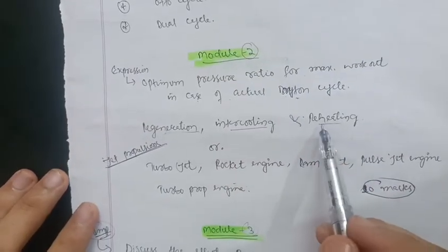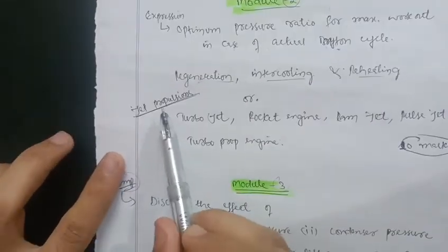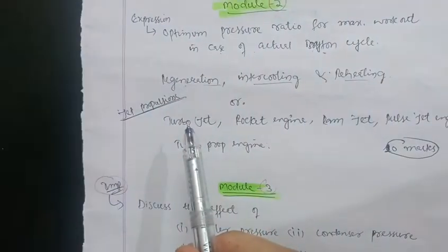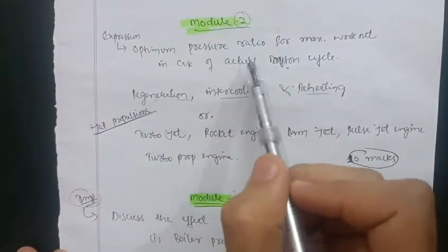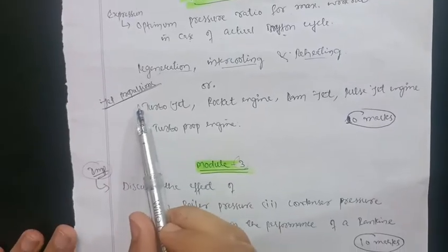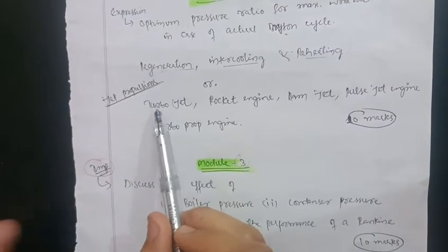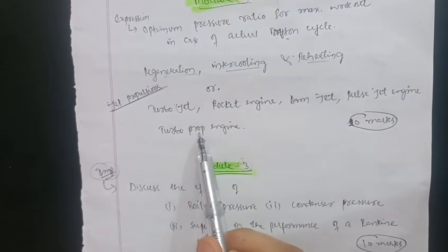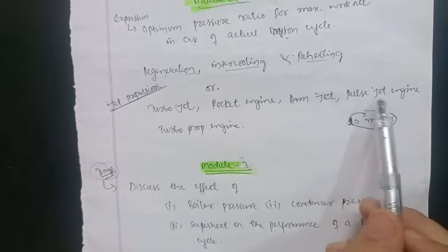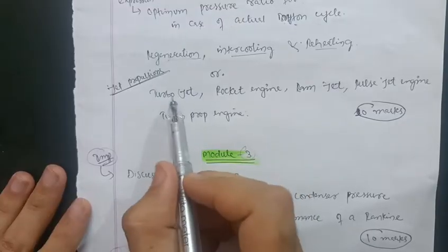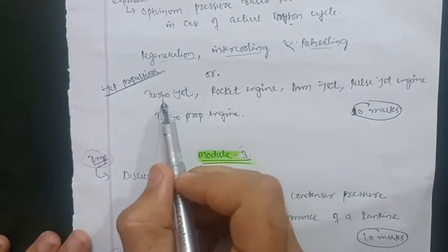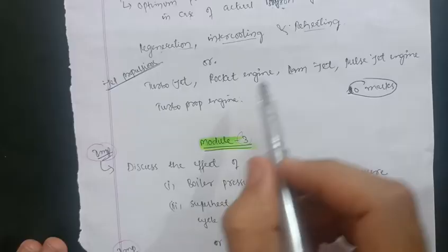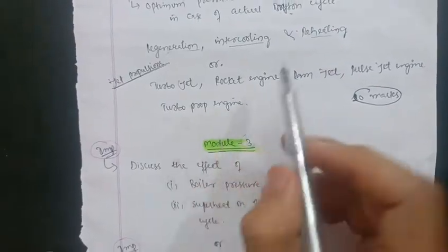Another important topic in Module 2 is regeneration, intercooling, and reheating — these three are the most important topics there. If you are not able to cover those, go through jet propulsion: the turbojet engine, rocket engine, ramjet engine, pulse jet engine, and turboprop engine. Jet propulsion also carries 10 marks and they will likely ask about turbojet and rocket engines.